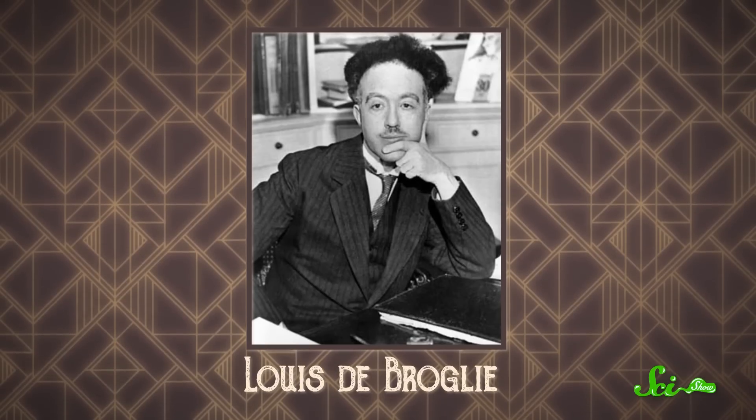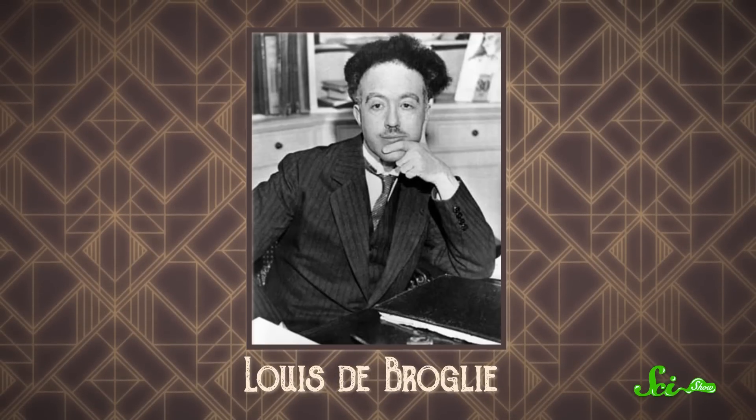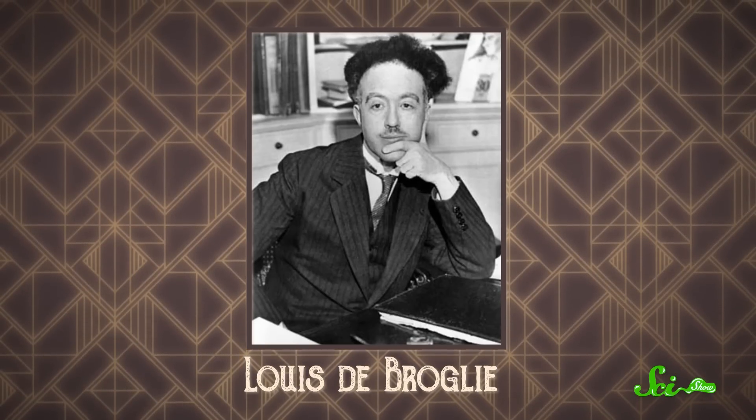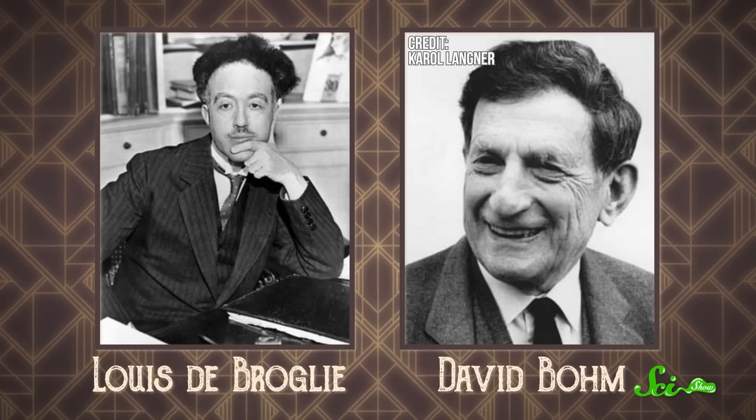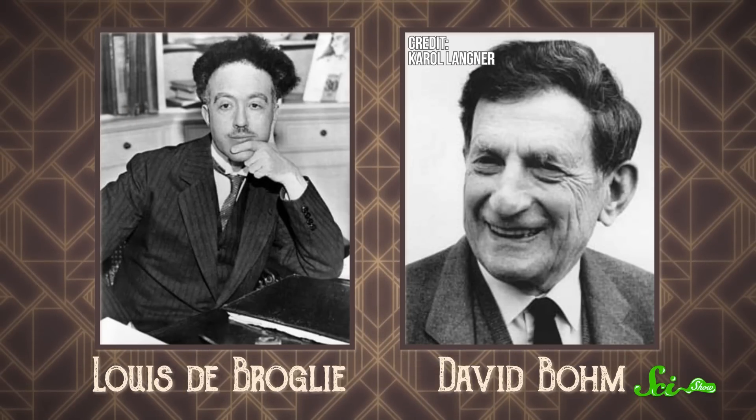The theory was first proposed in 1927 by another pioneer of quantum mechanics, Louis de Broglie. It was shelved until the 1950s, when David Bohm rediscovered and improved it. Today, it's also known as the de Broglie-Bohm theory.